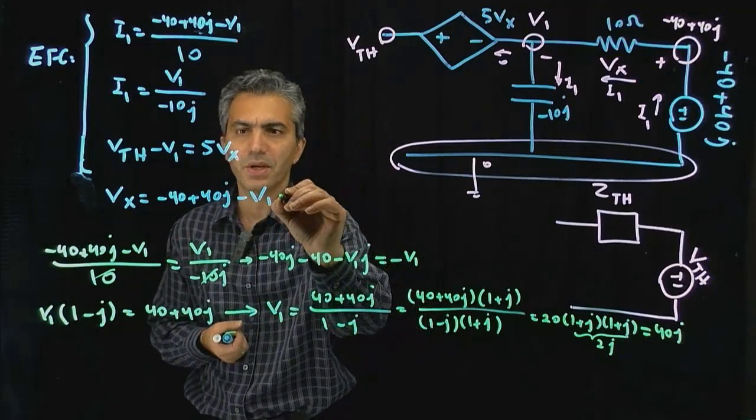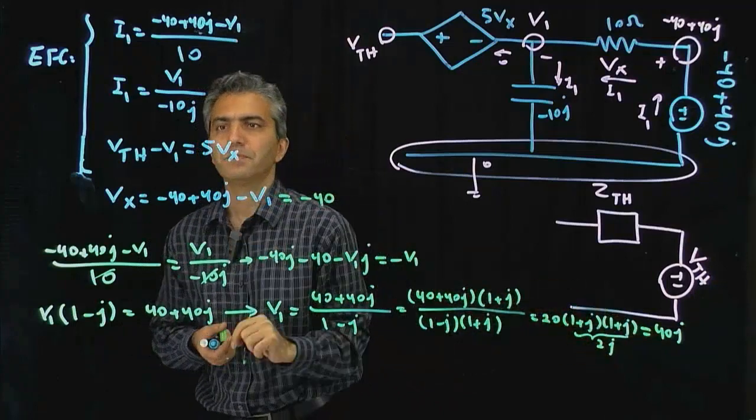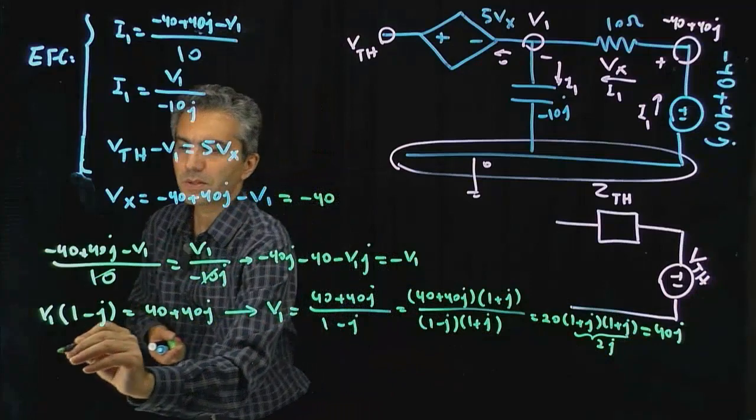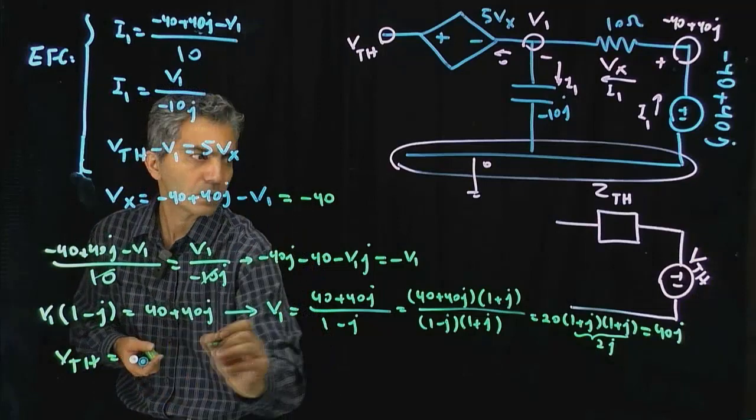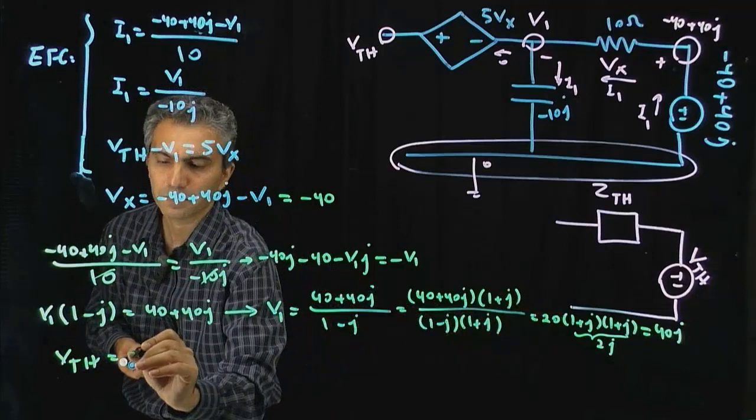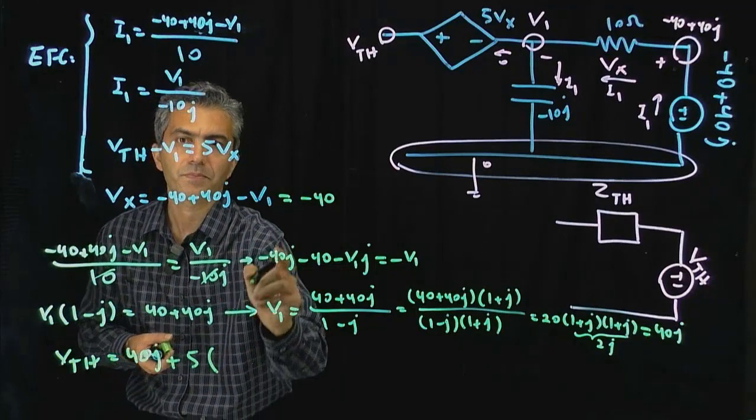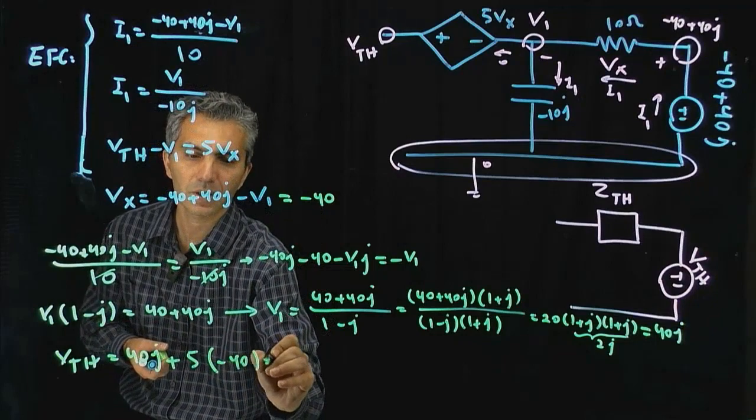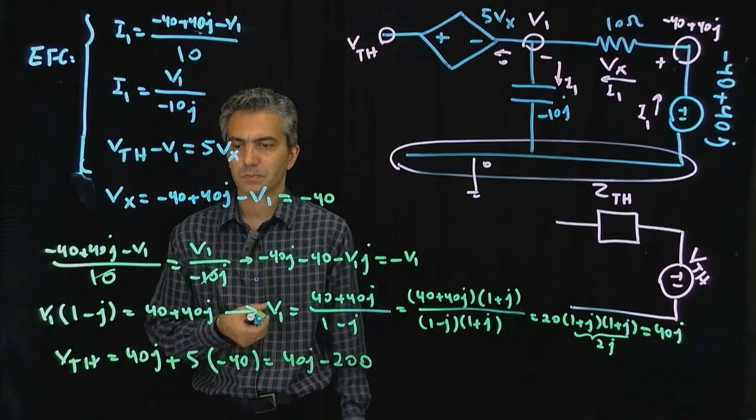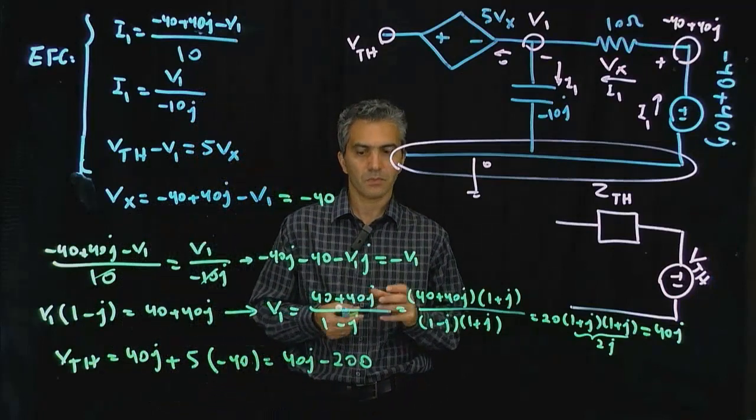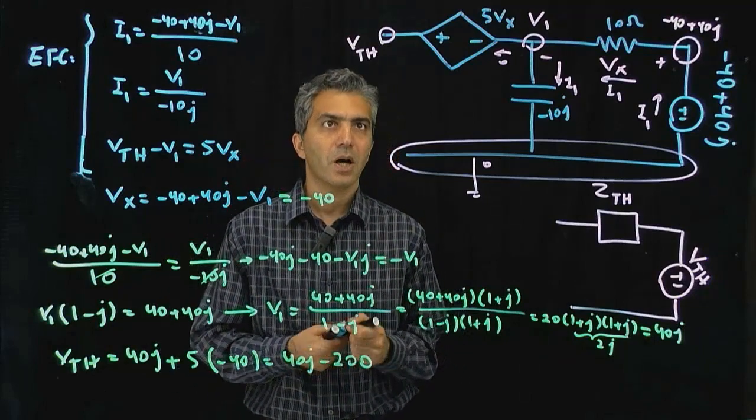For example, Vx becomes simply minus 40 by putting this here. And V Thevenin from this equation is V1, which is 40J, plus 5 times Vx, which is minus 40, so that would be 40J minus 200. So now I have V Thevenin. Okay, now I'm going to move on to calculating the I short circuit.